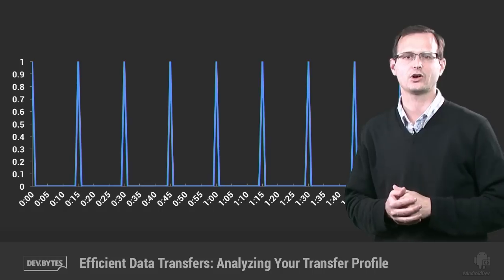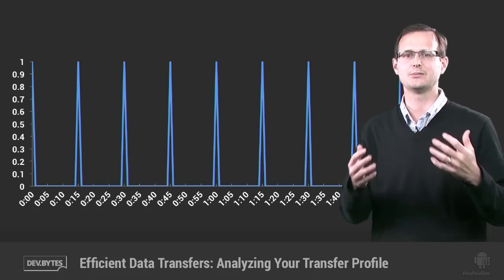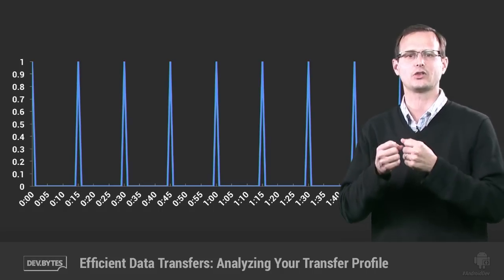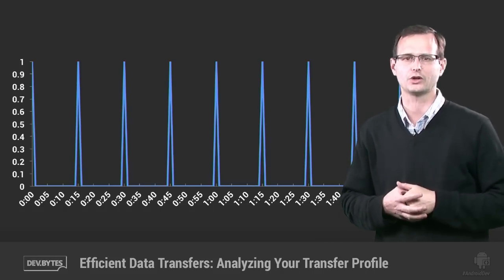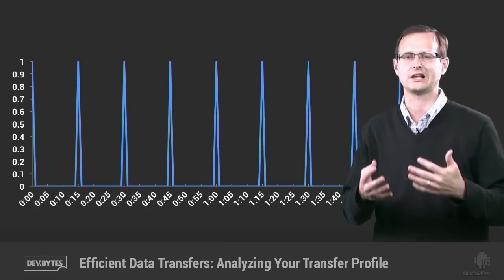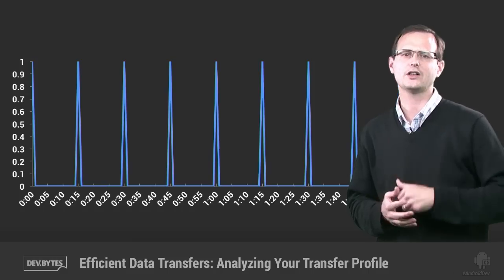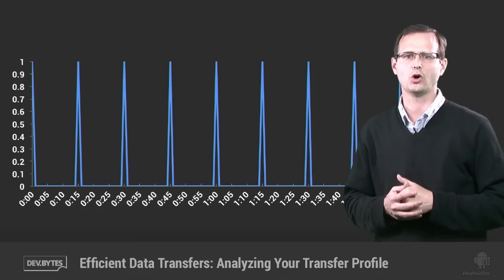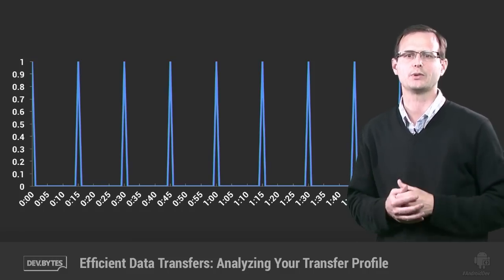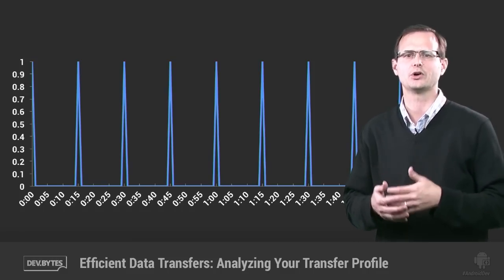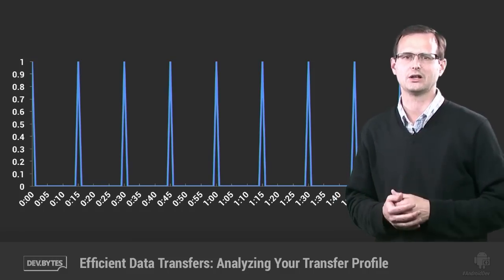Periodic data transfer spikes are typically an indicator of either a regular scheduled upload, such as analytics or ad impressions, or client-side scheduled polling, generally implemented using a timer or a repeating alarm.